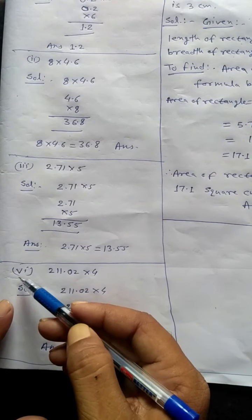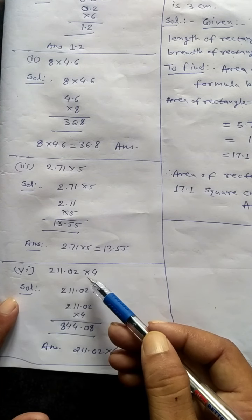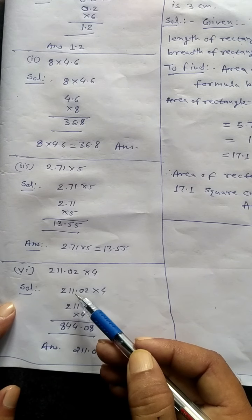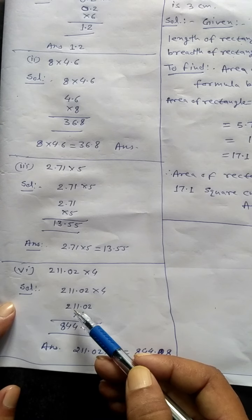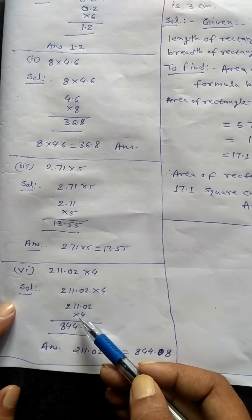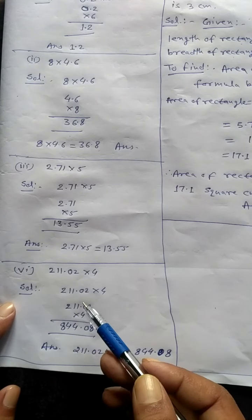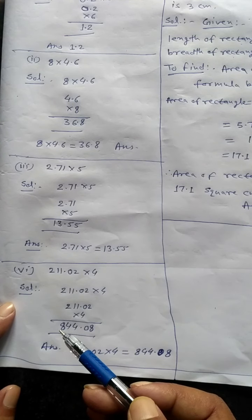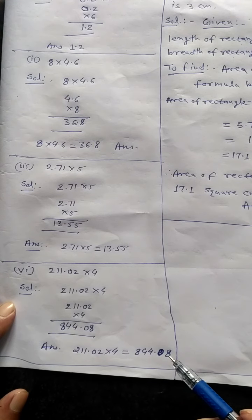Question number four: 211.02 into 4. Solution: 211.02 into 4. 4 twos are 8. 4 zeros are 0. 4 ones are 4. 4 ones are 4. 4 twos are 8. Therefore the answer is 844.08.